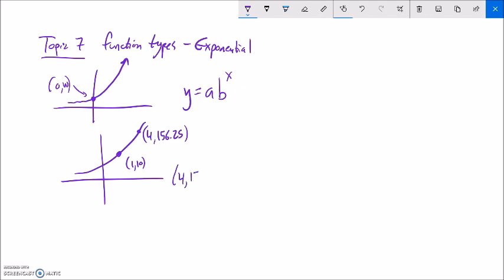And I can write that equation by using these points. So for example, this point 4, 156.25. I can plug that into my general equation. First one's x, second one's y. So 156.25 equals a times b to the x. That's the fourth power.